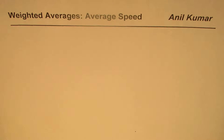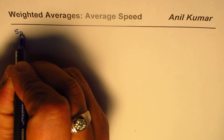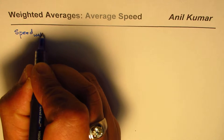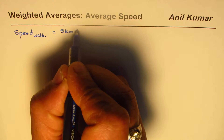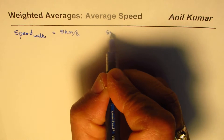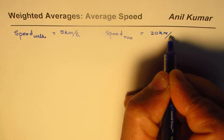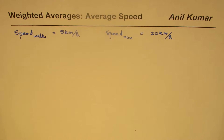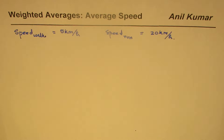I'm Adil Kumar, welcome to my series on weighted averages. Now let us discuss how to find average speed. We'll consider a person whose speed of walking is 5 kilometers per hour and speed to run is 20 kilometers per hour, and we need to find the average speed of this person who walks for some time and then runs for some time.